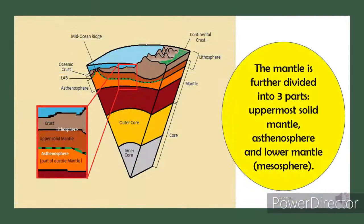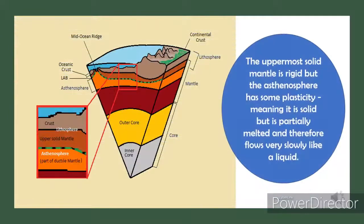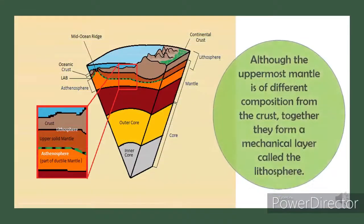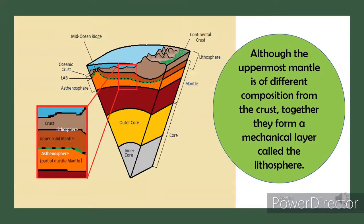The mantle is further divided into three parts: the uppermost solid mantle, the asthenosphere, and the lower mantle called the mesosphere. The uppermost solid mantle is rigid, but the asthenosphere has some plasticity — it is solid but partially melted and therefore flows very slowly like a liquid. Together, the uppermost mantle and the crust form a mechanical layer called the lithosphere.